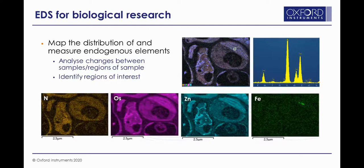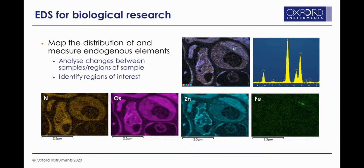Here is another example — again plant cells, stained with osmium and zinc as seen in the maps. This shows where you can find specific regions of interest; in this instance, a concentration of iron in the chloroplast, which is a relatively rare occurrence but can quite clearly be identified using EDS.